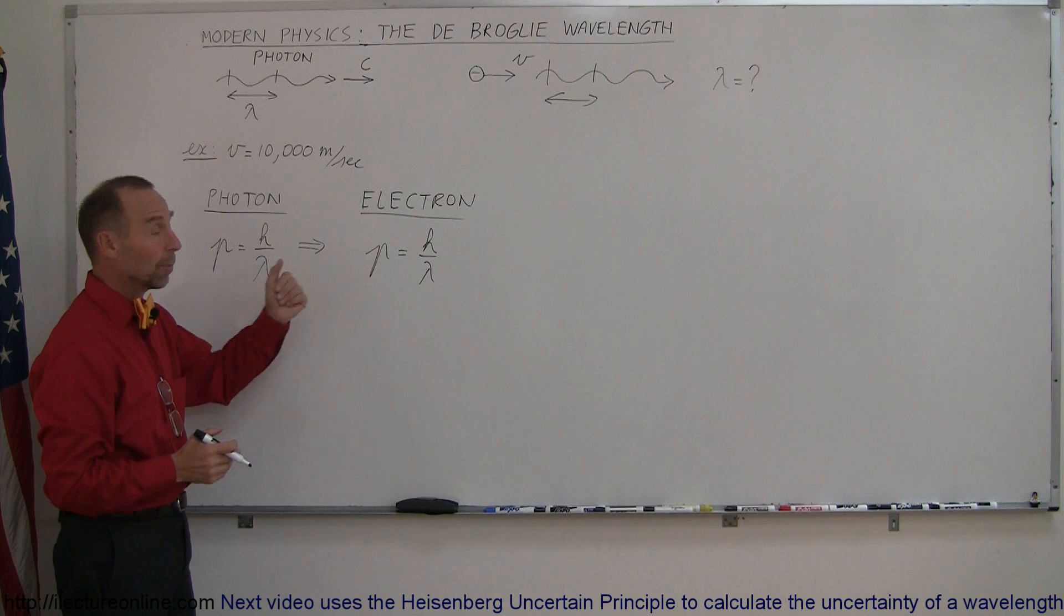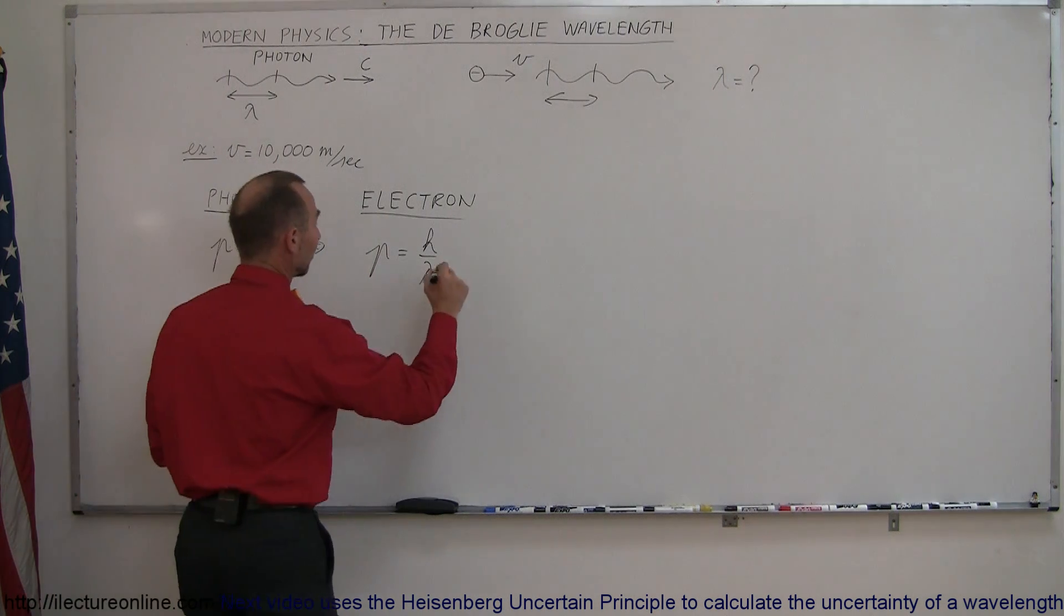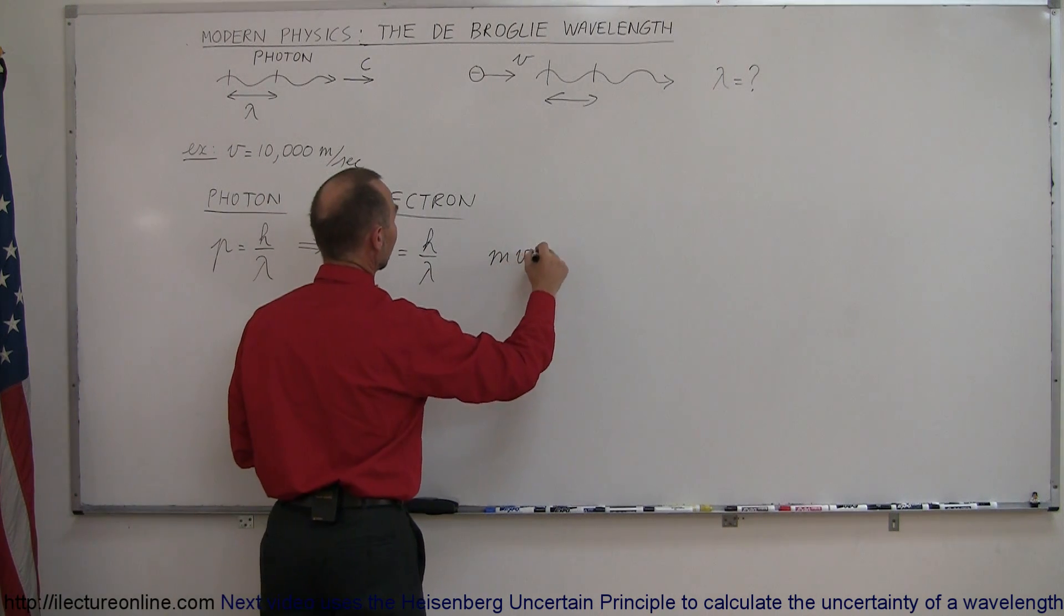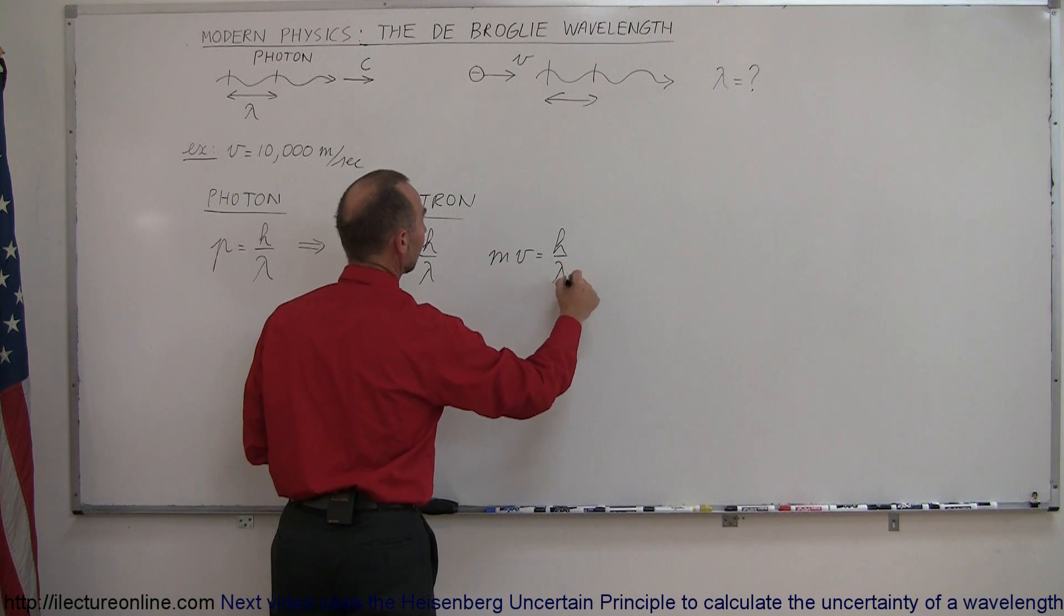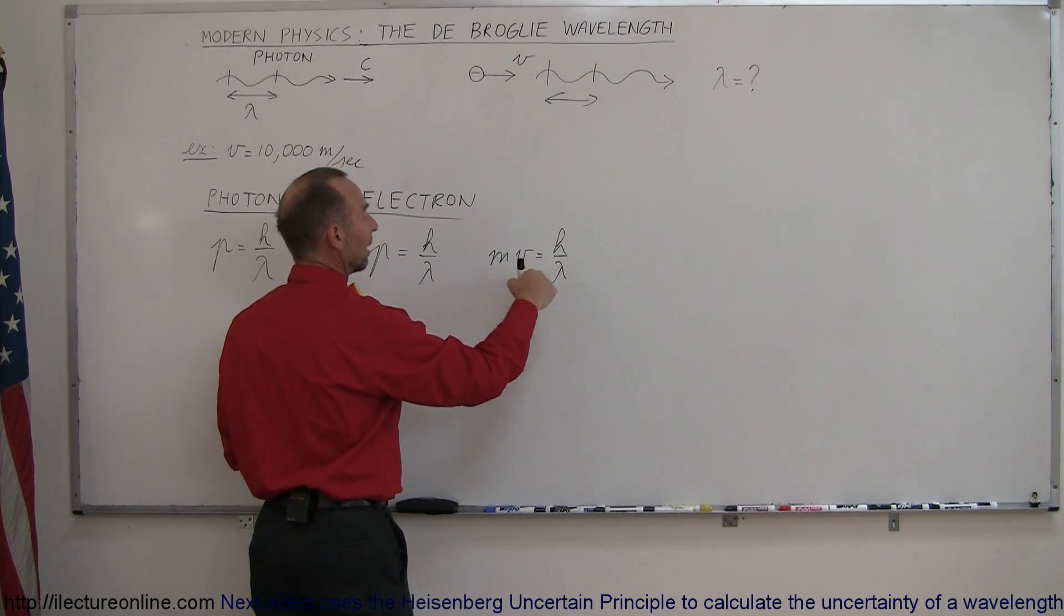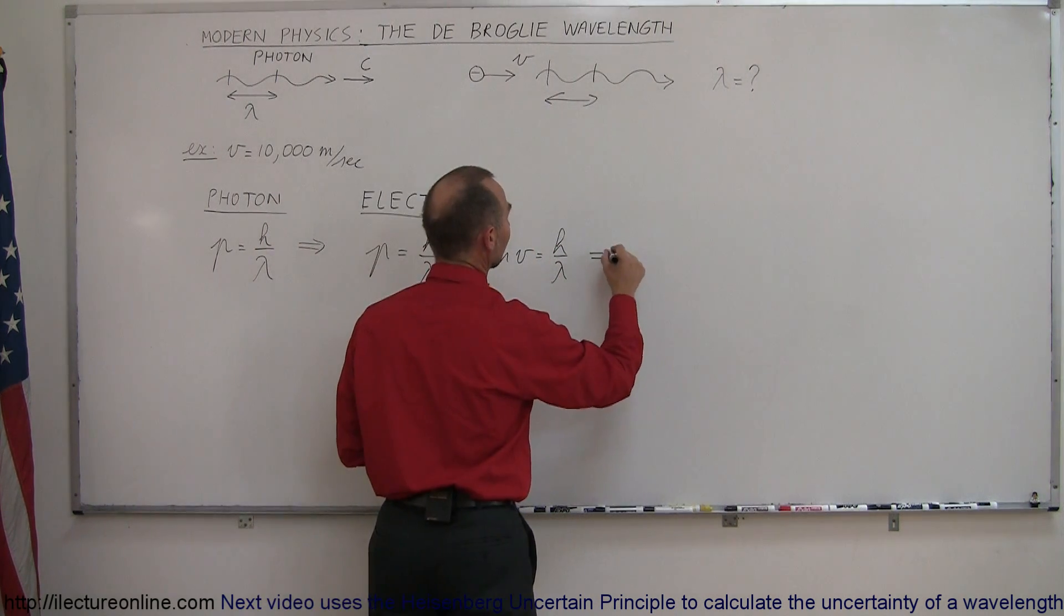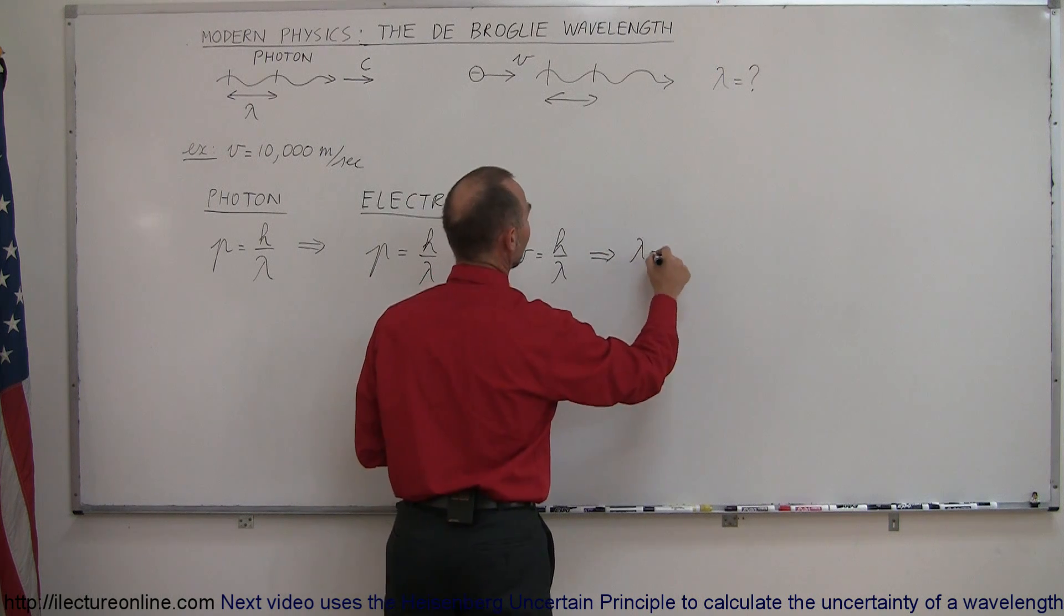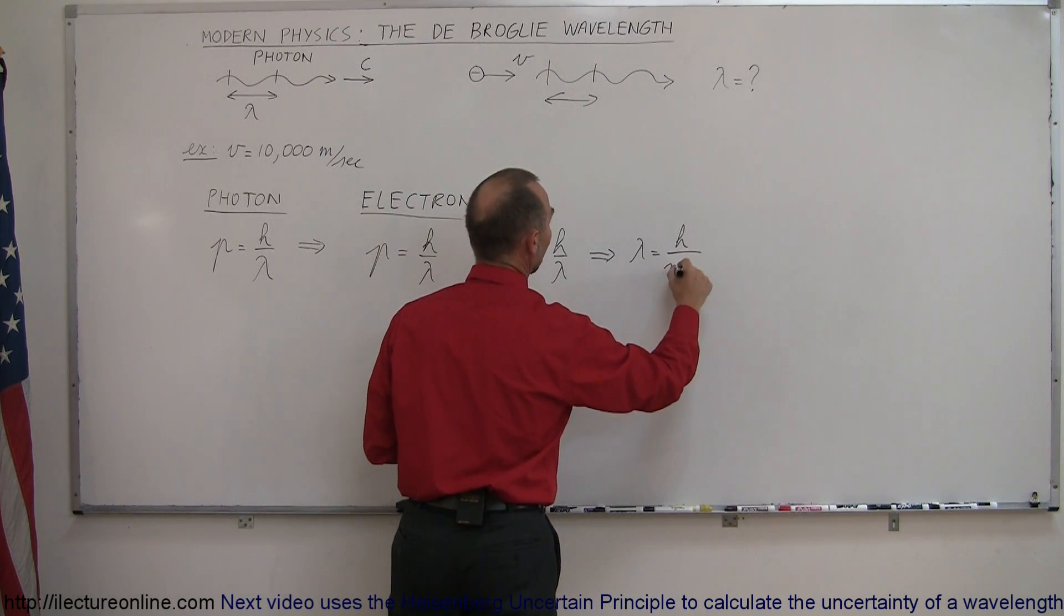And of course for an electron the momentum is mass times velocity, so we can say that mass times velocity is equal to h over lambda. And then if we put lambda over there and mv over here, we can then say that lambda is equal to h Planck's constant divided by mv.